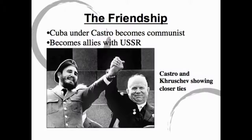But by the 1960s, he had set up a communist dictatorship and had become allies with the Soviet Union. That did not sit well with the United States, because Americans feared the Soviet Union would use Cuba as a base to attack the United States and start spreading communism in Latin America. You need to remember that Cuba is very close to the United States — only 90 miles off the coast of Florida.